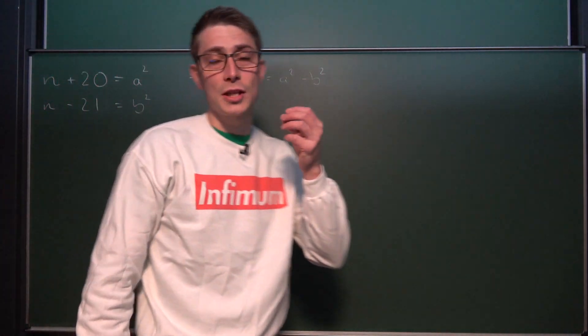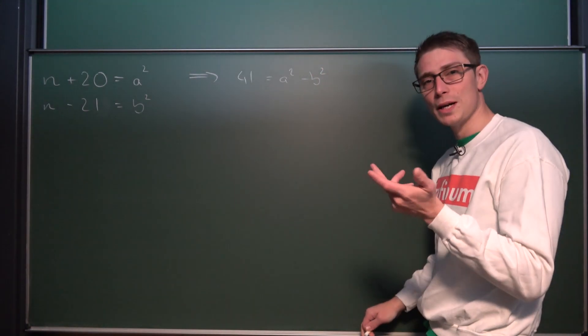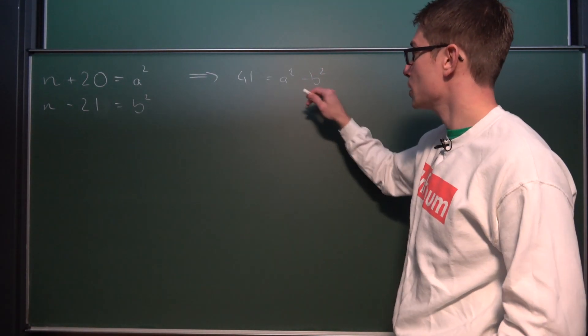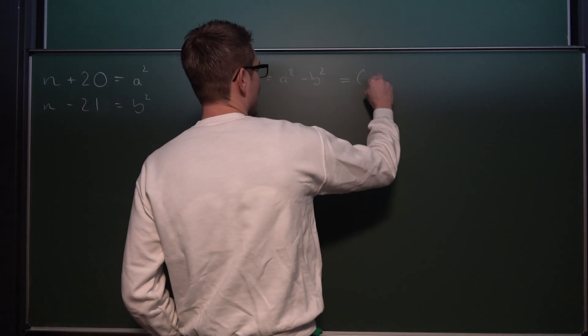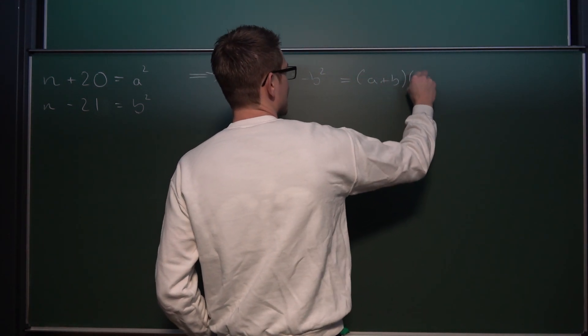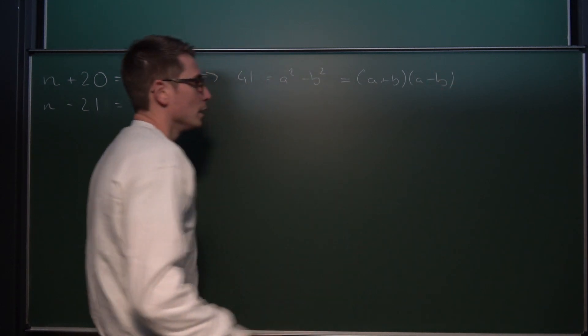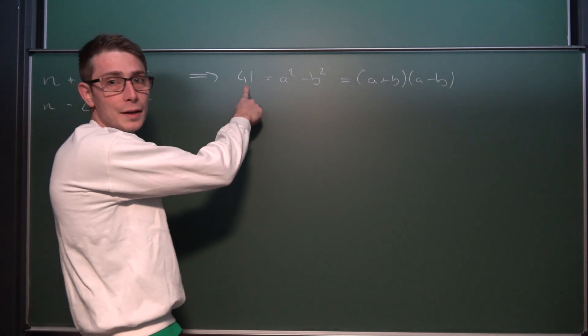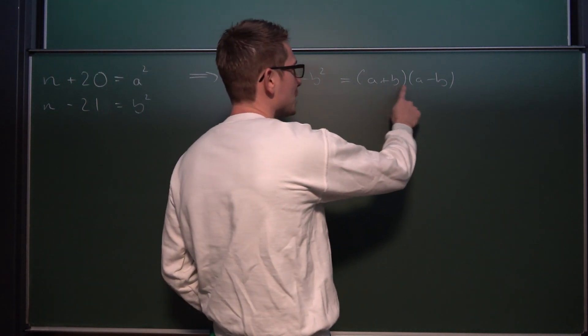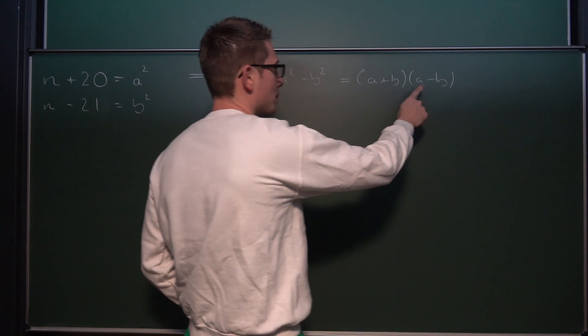And subtracting here actually does work wonders because you might notice something: A squared minus B squared is just a difference of two squares, resulting in A plus B times A minus B. Now let us read out what is standing here on the blackboard: 41 is equal to the multiplication of two numbers.